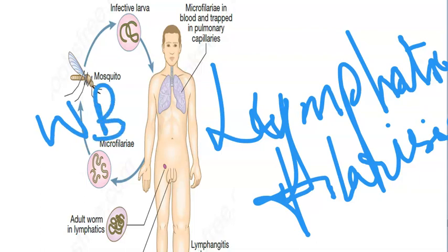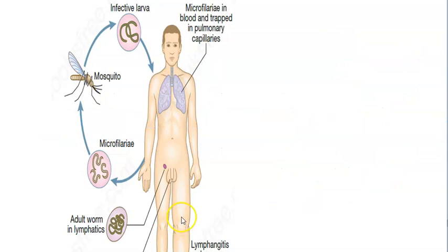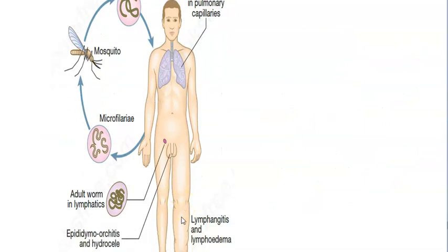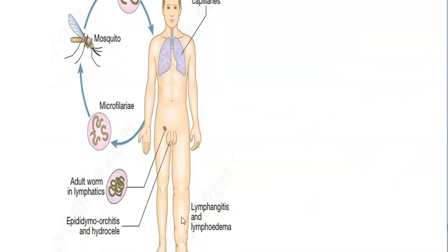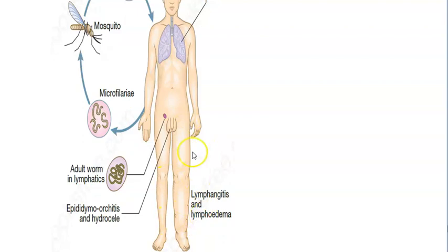The disease he's getting is lymphatic filariasis. The worms responsible are Wuchereria bancrofti or Brugia malai, among others. The microfilaria in this man's blood get trapped in the pulmonary capillaries.